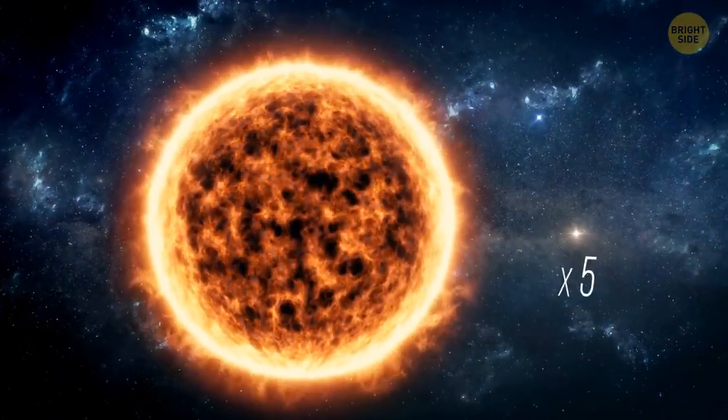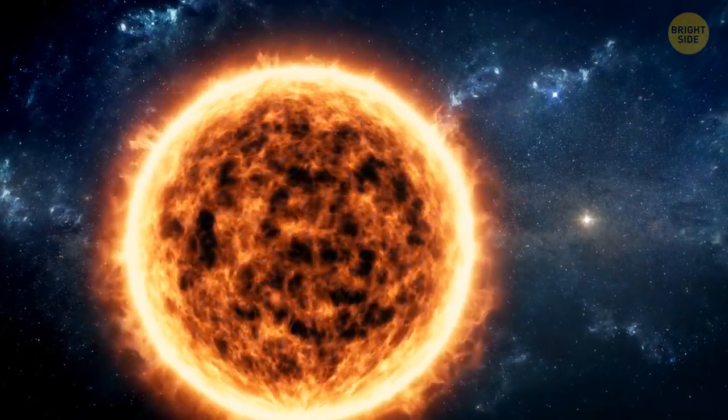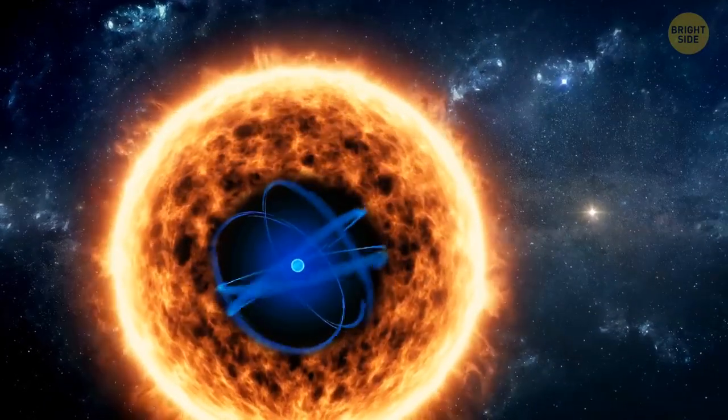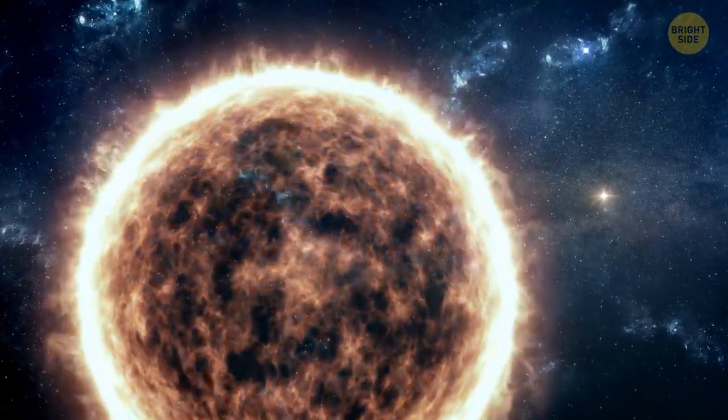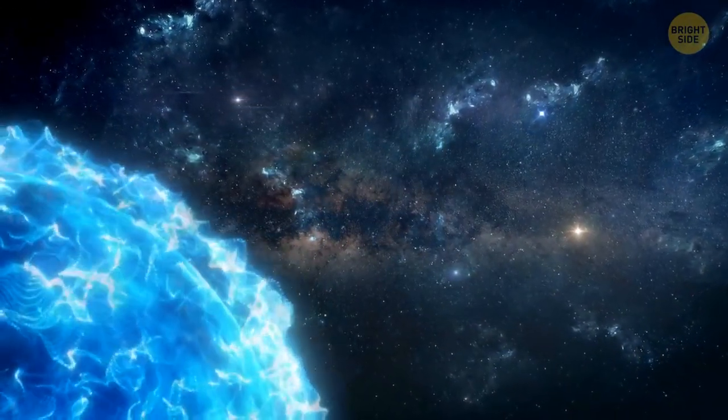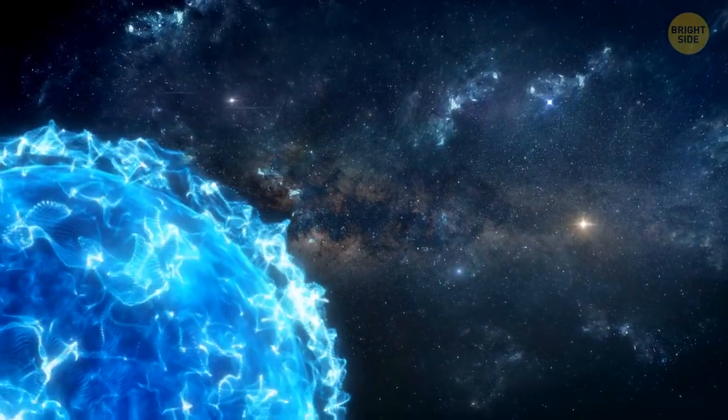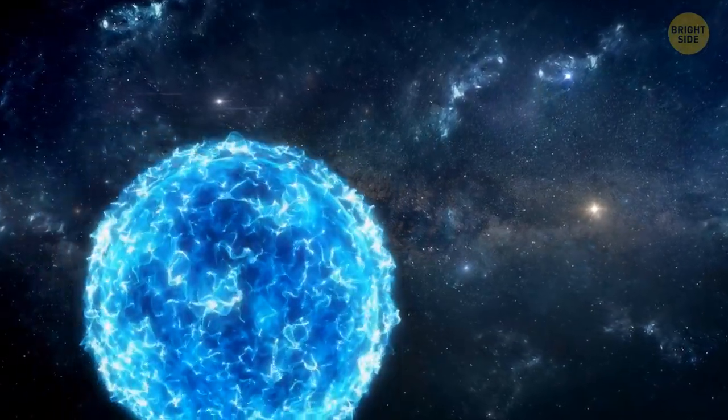Imagine a massive star, at least five times the mass of our sun, reaching the end of its life. It might be because it's run out of its nuclear fuel. If it happens, the star starts to cool off. The pressure inside drops, and the gravity starts to squeeze inward. And then, more than a million times the mass of our planet collapses within 15 seconds.